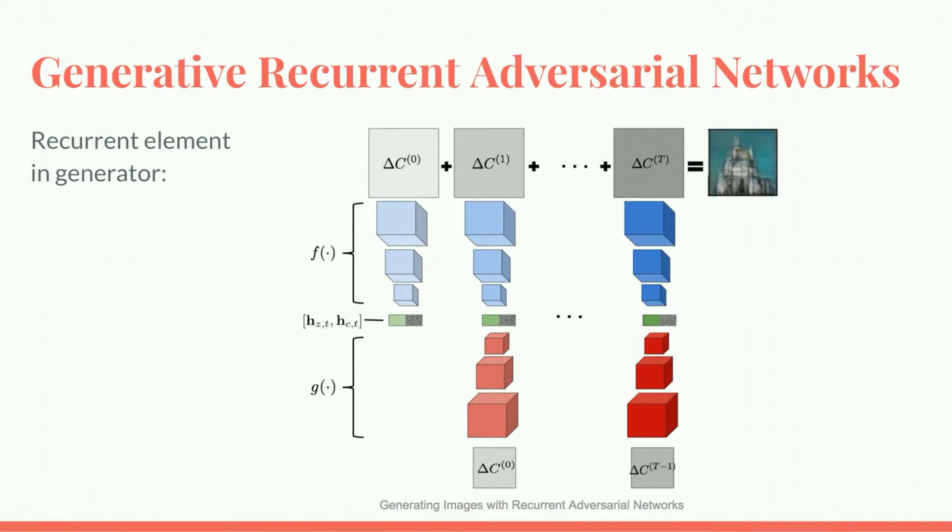To devise a more flexible generator, we took inspiration from the paper Generating Images with Recurrent Adversarial Networks. The paper introduced Generative Recurrent Adversarial Networks, or GRANs, as a way to generate highly realistic images. Instead of generating the final output all at once, the generator creates a number of intermediate outputs at distinct time steps, where each output depends on all of those that came before it.